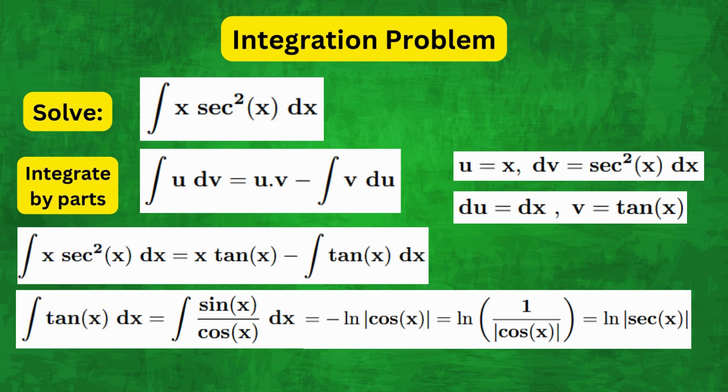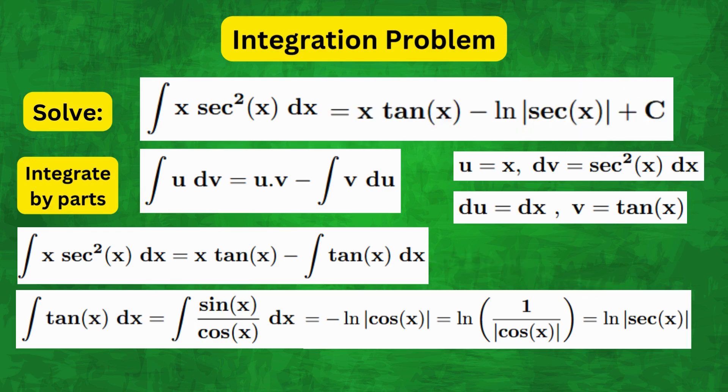Therefore, plugging it all in, we get x tan(x) - ln|sec(x)| + C, which is the answer.